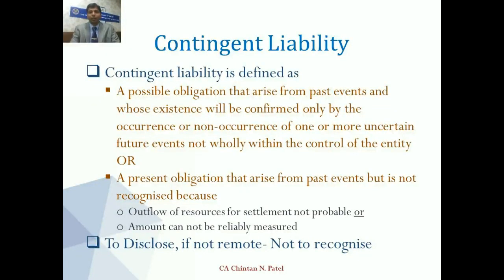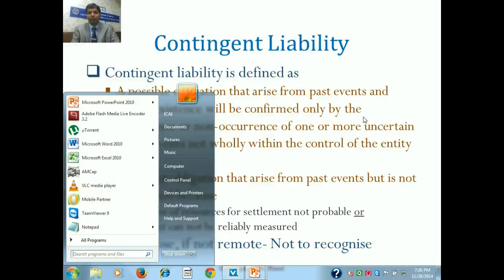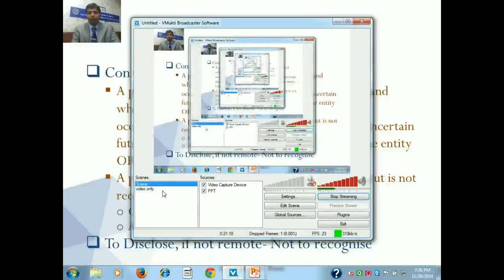A contingent liability is defined as a possible obligation that arises from past events and whose existence will be confirmed only by the occurrence or non-occurrence of one or more uncertain future events not wholly within the control of the entity. Alternatively, it is a present obligation that is not recognized because the outflow is not probable or the amount cannot be reliably measured.